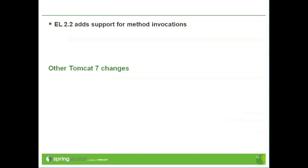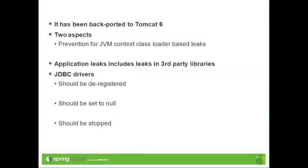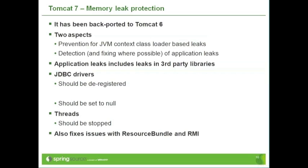So that's the specification changes. Let's look at some of the other changes in Tomcat 7. First, and probably one of the biggest changes, is the memory leak protection — this is sufficiently useful that we've backported it to Tomcat 6. There are two aspects: prevention for JVM context class loader-based memory leaks, implemented in the JRE memory leak prevention listener configured in server.xml. That listener works around a number of known issues in the JVM that can cause memory leaks if you use particular parts of the Java API.